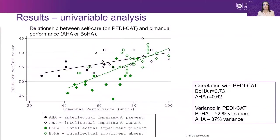Here we see the relationship between self-care and bimanual performance, or hand function. Black indicates children with unilateral CP whose hand function was assessed using the AHA. Green indicates children with bilateral CP whose hand function was assessed using the BOHA. The presence or absence of an intellectual impairment is depicted by shading within the symbol. There is a strong correlation between the PediCAT and both the BOHA and the AHA.